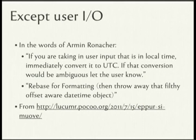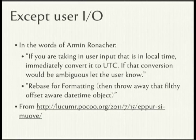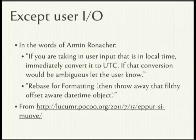Except when you're doing user I/O — obviously users don't want to deal with UTC all the time. They want to know that when they set that clock, the calendar will still read the right time for that meeting the next day. Tomorrow morning, 1:30 a.m. will happen twice — you don't know which one it is. Especially on a distributed team, 1:30 a.m. here could be a really interesting time. They may also not observe DST. If you're taking user input in local time, convert it to UTC. Make sure that conversion is unambiguous, and if it isn't, let the user know. Rebase for formatting: get an aware datetime, convert it, then throw it away. Naive and aware datetimes don't mix, so keep all naive ones in UTC.